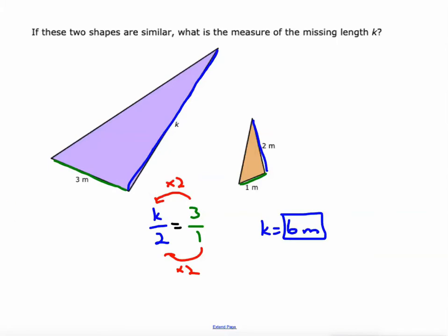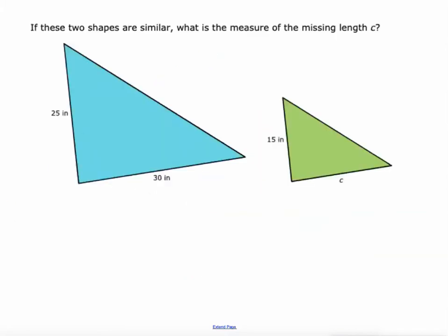Let's do something with a little bit more difficult numbers here. This one also shrinks from the blue to the green. So again, let's focus on this side here that we're trying to figure out C and its corresponding side over here is 30. So we'll say C is to 30 as then we'll go back over to the original triangle here with C on it. 15 is to 25.